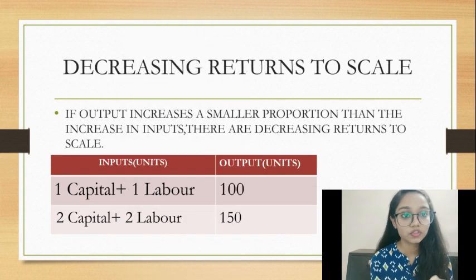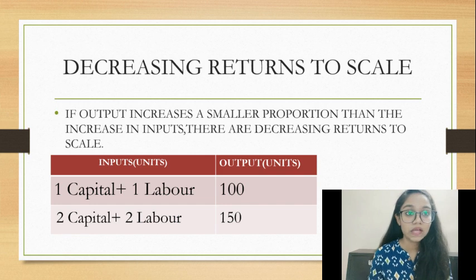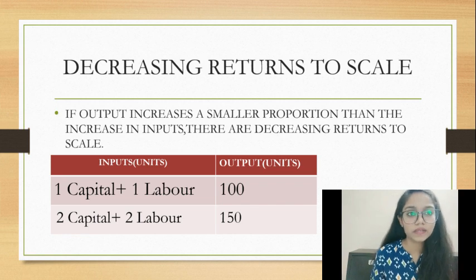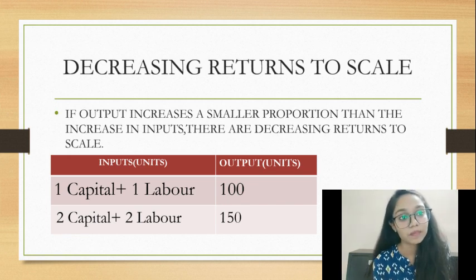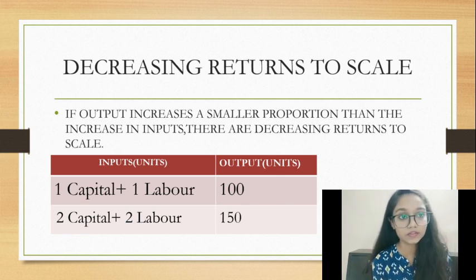Decreasing returns to scale means that the output does not increase as much as the input. For example, if inputs increase by 100% but output only increases by 80%, the proportionate change in output is less than the proportionate change in input — less than 100% — and we call this decreasing returns to scale.